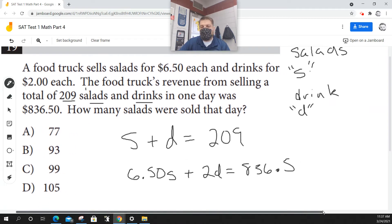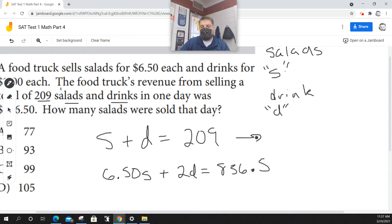You could solve this through a process known as substitution. I'm going to take S plus D and set it equal to 209, and then I'm going to solve for D. So to solve for D, I'm going to subtract S from both sides. And what I end up with is D is equal to 209 minus S.